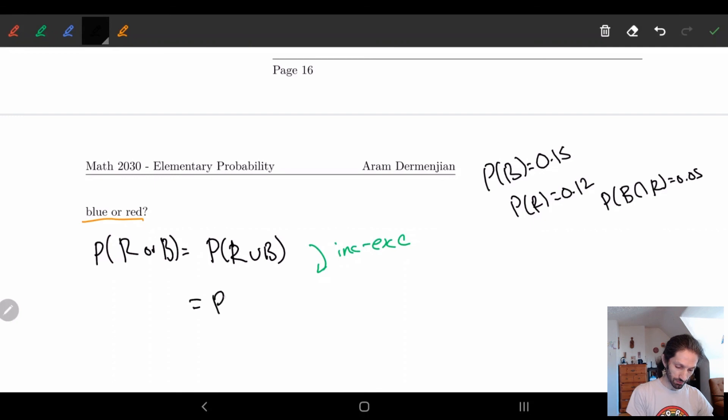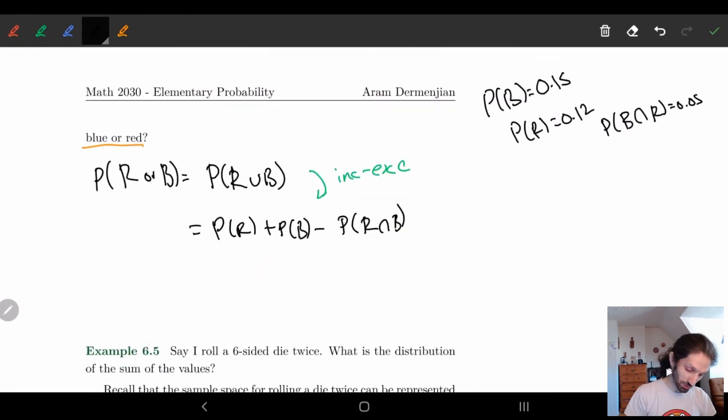And so here we have the probability of red plus the probability of blue minus the intersection of the two. That kind of rhymes. Probably red, probably blue, intersection of the two. Anyway, I'm going to be quiet now. And so we're going to just plug in our numbers and that should be it. So we have 0.15 plus 0.12 minus 0.05. So this is 0.27 minus 0.05, which is equal to 0.22. So 22%. So there you go.